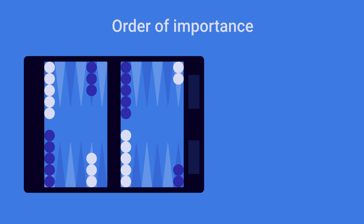The order of importance of your offensive points are: One, the five point. Both an inner point and a pure prime point, which improves your strength in both blitzing and priming.